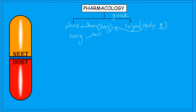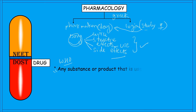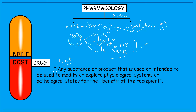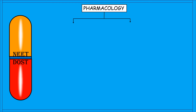In pharmacology we study the source of drugs, the structure of drugs, and the effects caused on the human body by drugs, including their side effects. The drug is defined as any substance or product that is used or intended to be used to modify or explore physiological systems or pathological states for the benefit of the recipient.